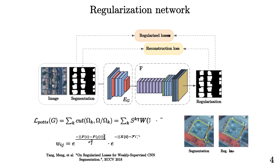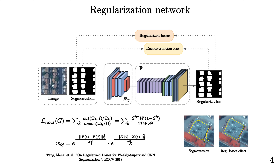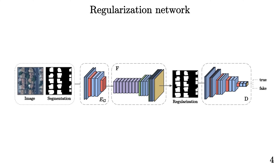Moreover, the autoencoder is encouraged to produce footprints aligned to the building boundaries observed in the intensity image, minimizing a linear combination of regularized losses. The computed terms are the soft and differentiable versions of the POTS and normalized cut criterions, popular graph clustering algorithms originally proposed for image segmentation. The autoencoder result is propagated through a discriminator network that aims to distinguish regularized and ideal footprints. The adversarial loss encourages the autoencoder to produce visually pleasing building footprints, similar to those present in OpenStreetMap.